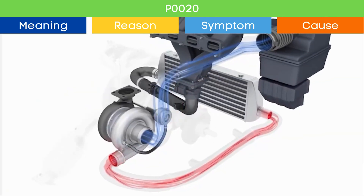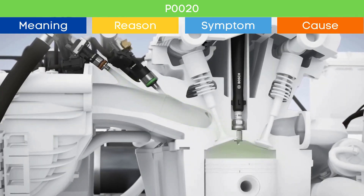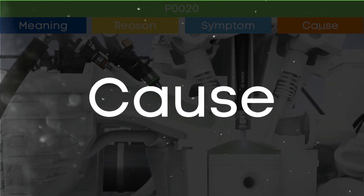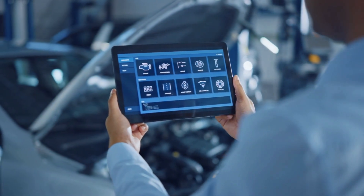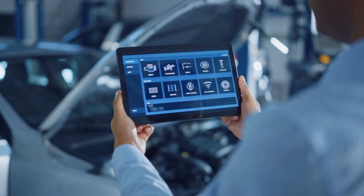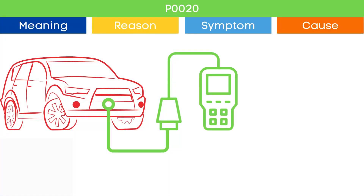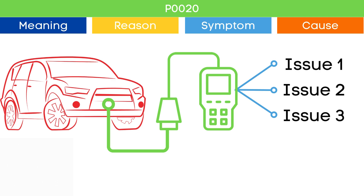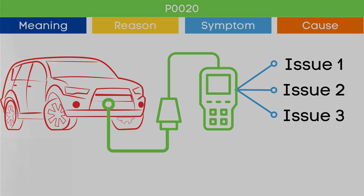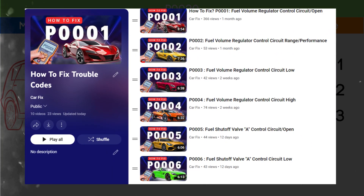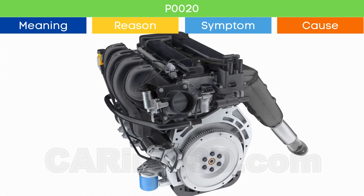Now that we understand the symptoms of P0020, let's delve into the causes. The P0020 code may be triggered due to several causes. To ensure the root cause, check other activated OBD2 codes, as these may indicate malfunctions in other engine management system components. You can find our playlist on the meaning and causes of each OBD2 code — the link is in the corner.